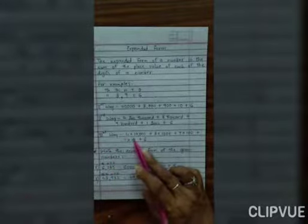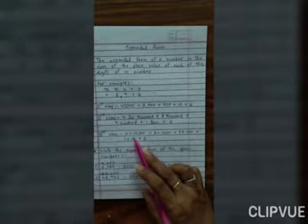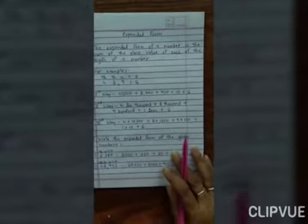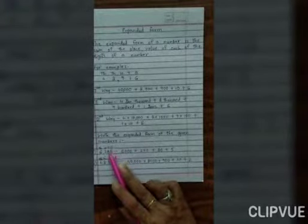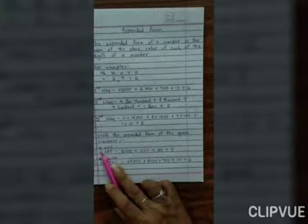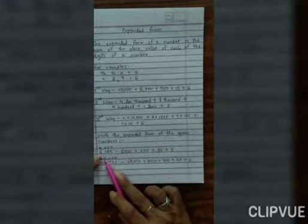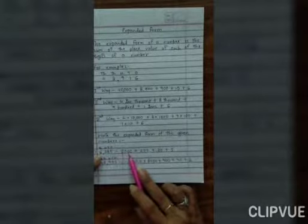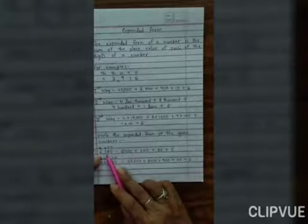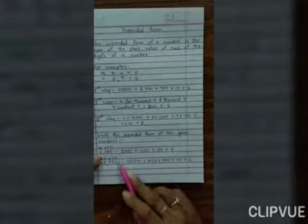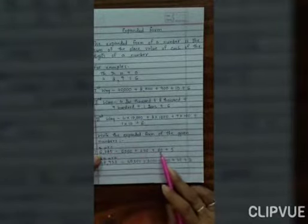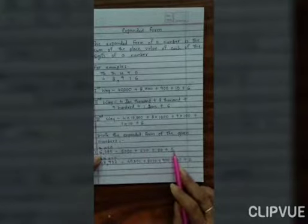Now let us write some examples. Ab hum dekhte hai kya hai. Write the expanded form of the given numbers. Six two eight five. Sab se pehle maine place value likh diya: ones, tens, hundreds, thousands. Now six sabse badi value pe hai to six thousand. Six thousand plus two is at hundredth place, so two hundred. Plus eight is at tens place, so eight becomes eighty, plus five.